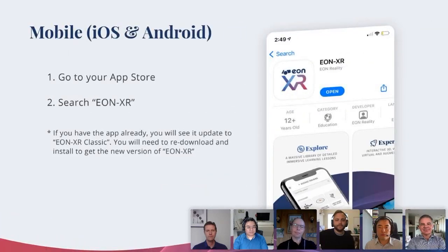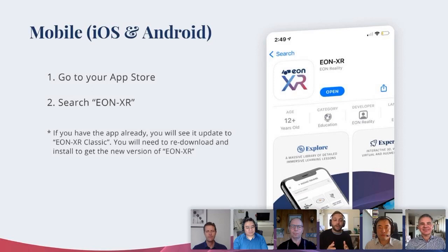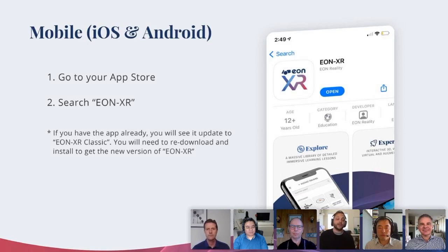If you're on a mobile device — iOS or Android — you're going to start by going to your App Store, be it the iOS App Store or the Google Play Store, and you're going to search EonXR. As of today, the 9.0 version is available and it is called EonXR. If you are a previous member and you already had the app installed, you will see it transition to a new name called EonXR Classic, which is what we're calling the old version of the app as we make this transition. So if you already had the app, you'll need to go to the App Store again and search for EonXR and download the new version, which is simply just called EonXR.